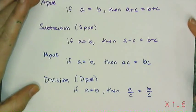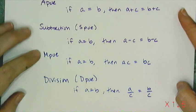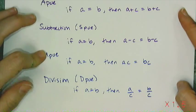So these are the four properties of equality that we're going to use to solve equations. APO, SPO, MPO, and DPO for addition, subtraction, multiplication, and division.